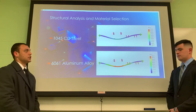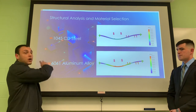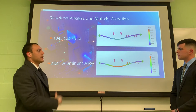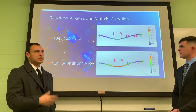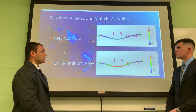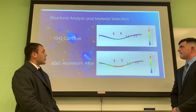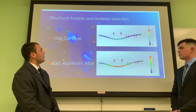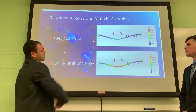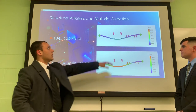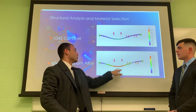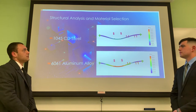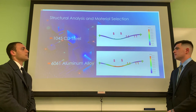This is another structural simulation that we did, this time of the crossmember. We again ran a couple of different materials to see which one would perform and give us desirable results. As you can see, the results are different — 1045 carbon steel had much less deflection where the seat was compared to aluminum, and that led us to go with steel as our choice of material for the crossmember.